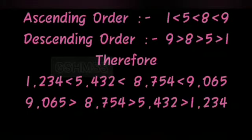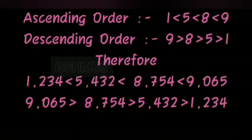These are the thousands place digits. To arrange in increasing order: first 1, next 5, then 8, and next is 9. For descending order, we arrange from the big number to the small number, so: 9, 8, 5, 1.